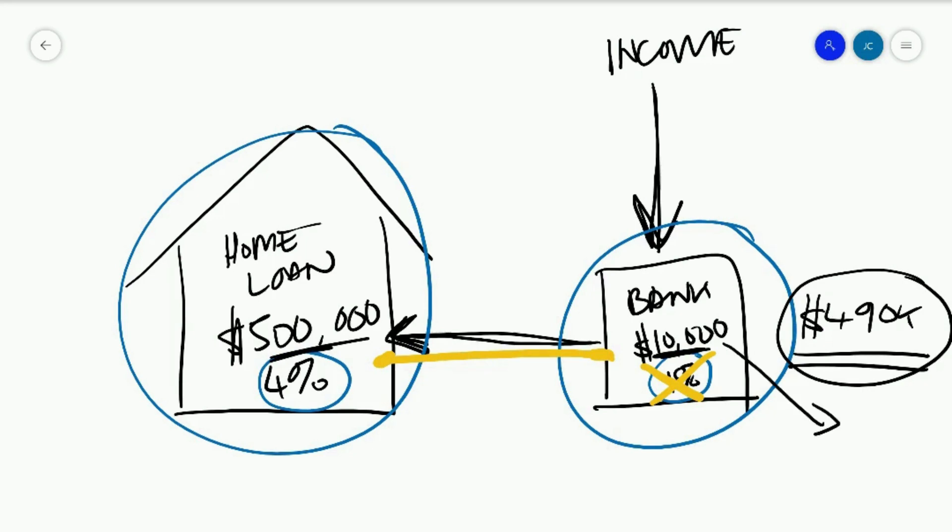Effectively, that 10% is now saving you 4% rather than making you 1%.